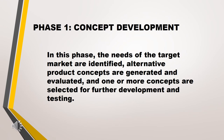Phase 1 is concept development. The needs of the target market are identified. Alternative product concepts are generated and evaluated, and one or more concepts are selected for further development and testing. Concept generation begins with the customer's needs and product specifications, resulting in product concepts. Concept selection involves evaluating those concepts, comparing strengths and weaknesses, and selecting a concept that needs development.